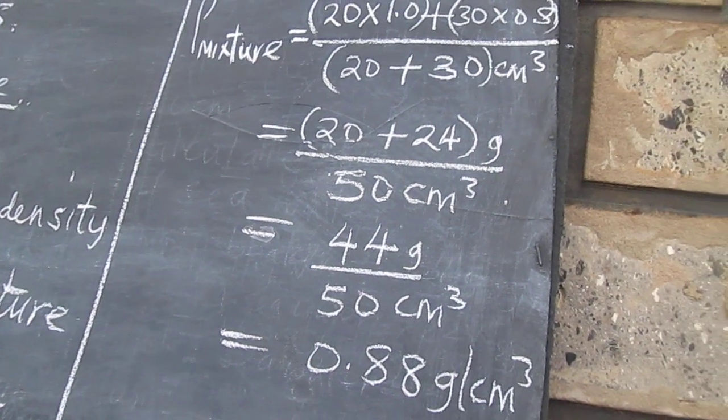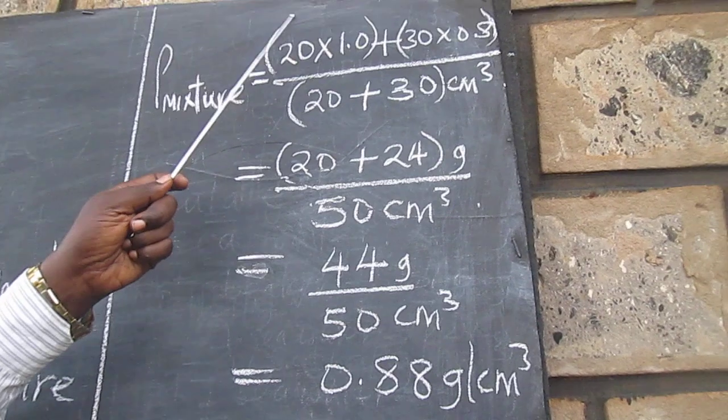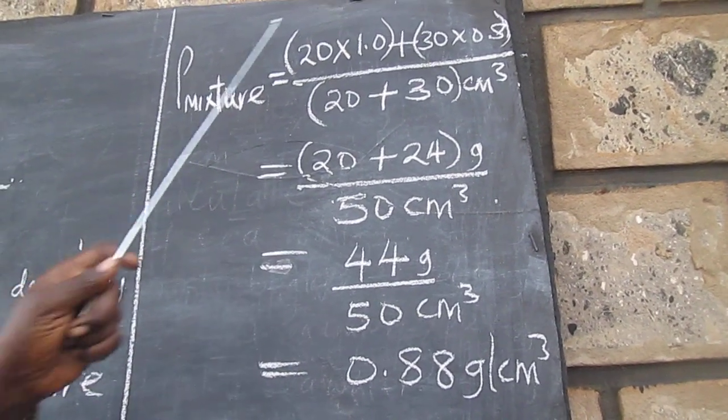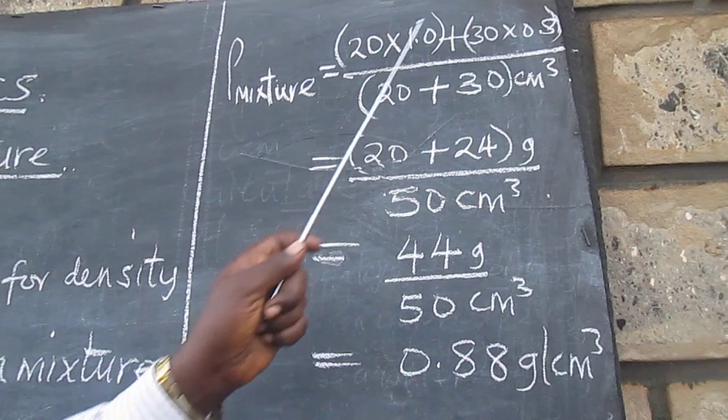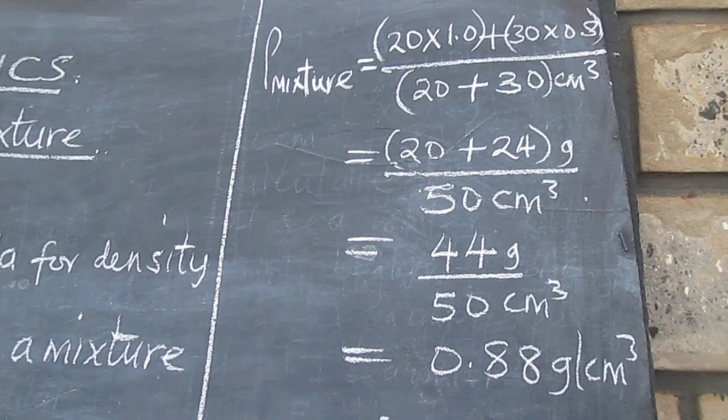So we can see that the density of the mixture will be given by volume of water times density of water plus the volume of ethanol times density of ethanol divided by volume of water plus the volume of ethanol.